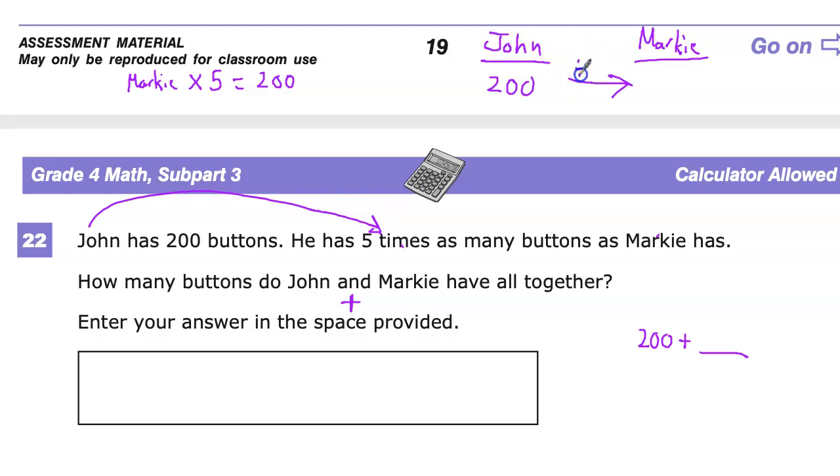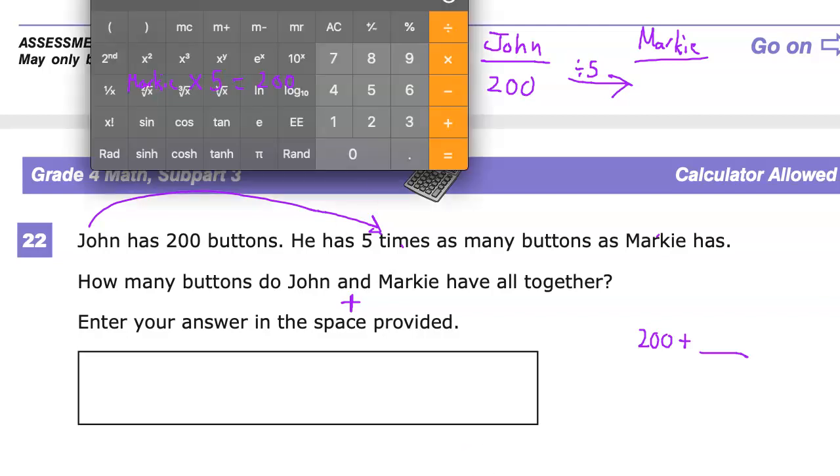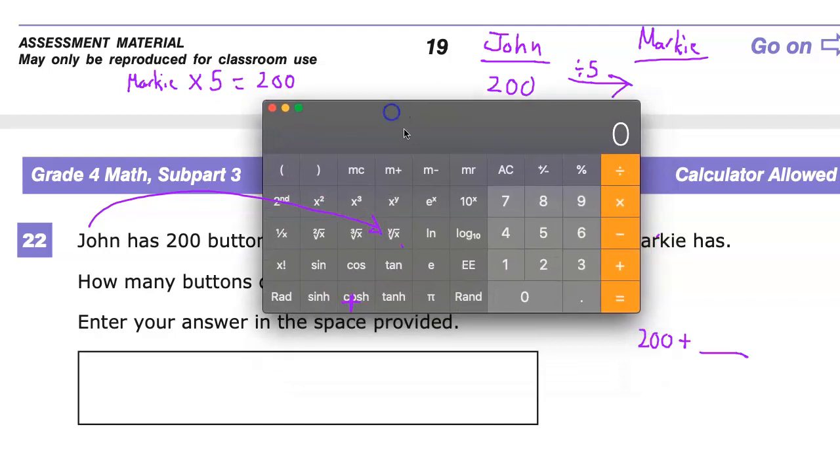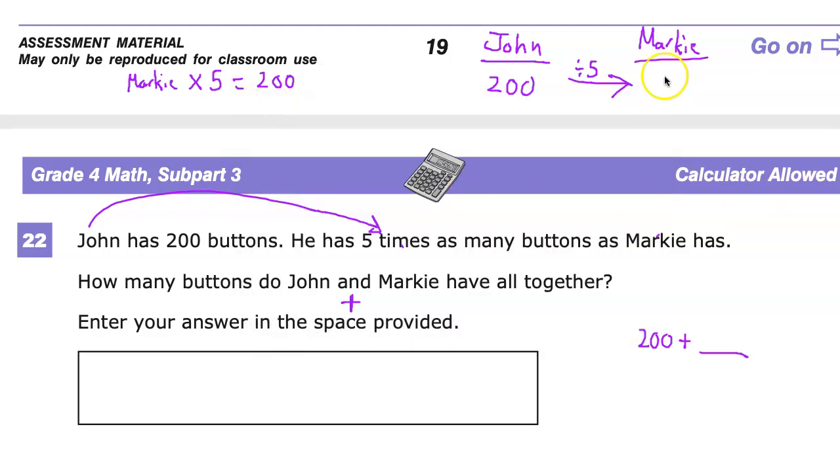This is a calculator allowed section, so I'm not going to look a gift horse in the mouth. Not for very long, anyway. It's rude to stare anyway. 200 divided by five gives me 40. So that goes here.